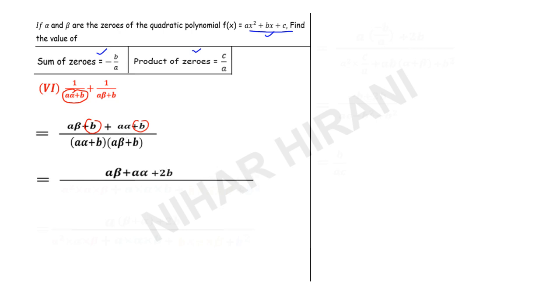Now here I will do the binomial multiplication. So a alpha times a beta, that will be a times a times alpha times beta, so a square alpha times beta, isn't it?